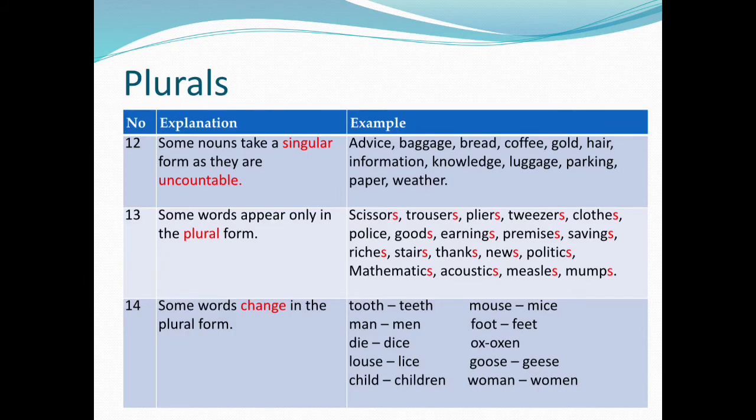12. Some nouns take a singular form as they are uncountable — advice, baggage, bread, coffee, gold, hair, information, knowledge, luggage, parking, paper, weather.